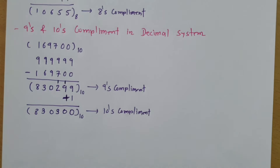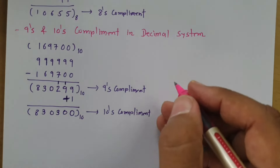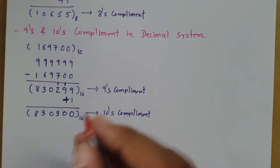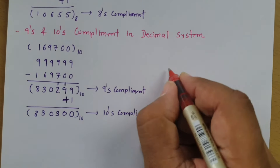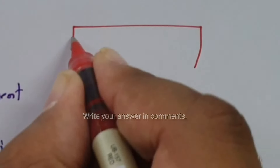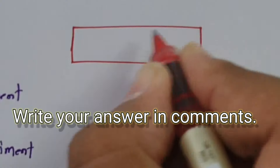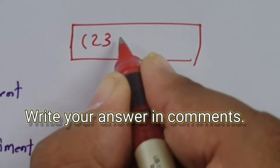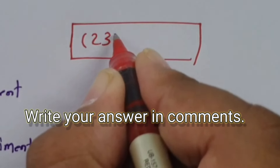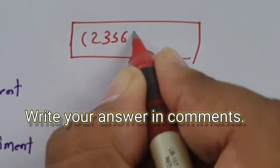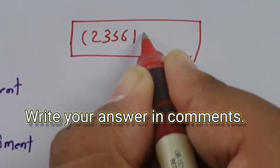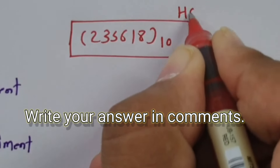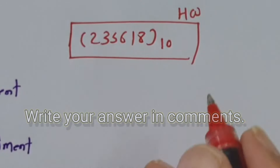I'll give you one self-study problem — write your answer in comments. A decimal number is given; find its 9's and 10's complement and write your answer in the comments.